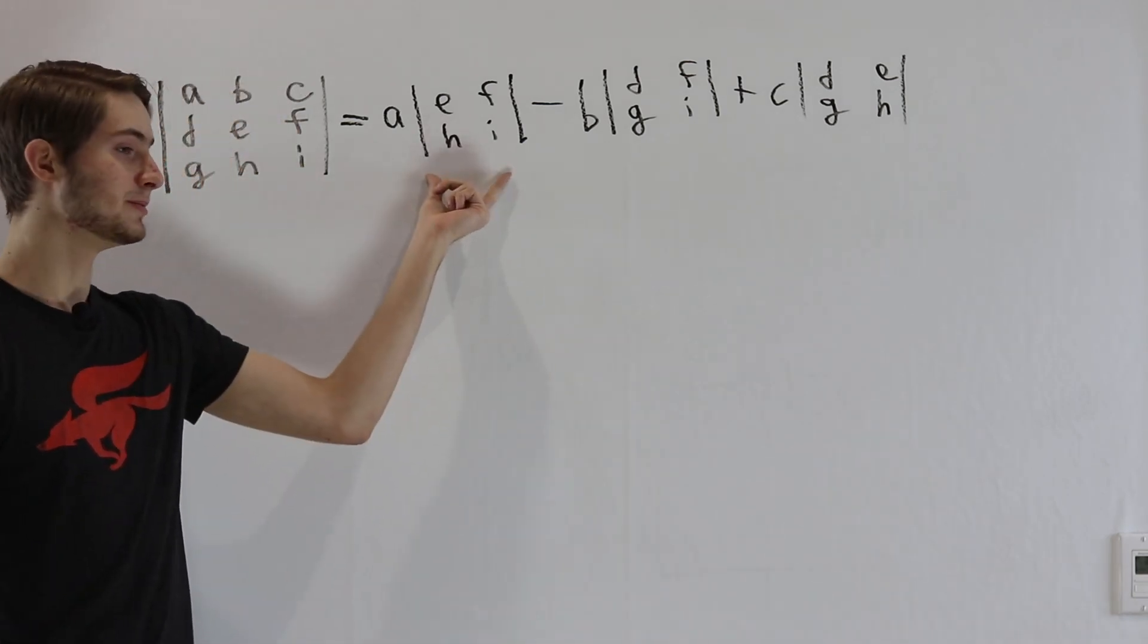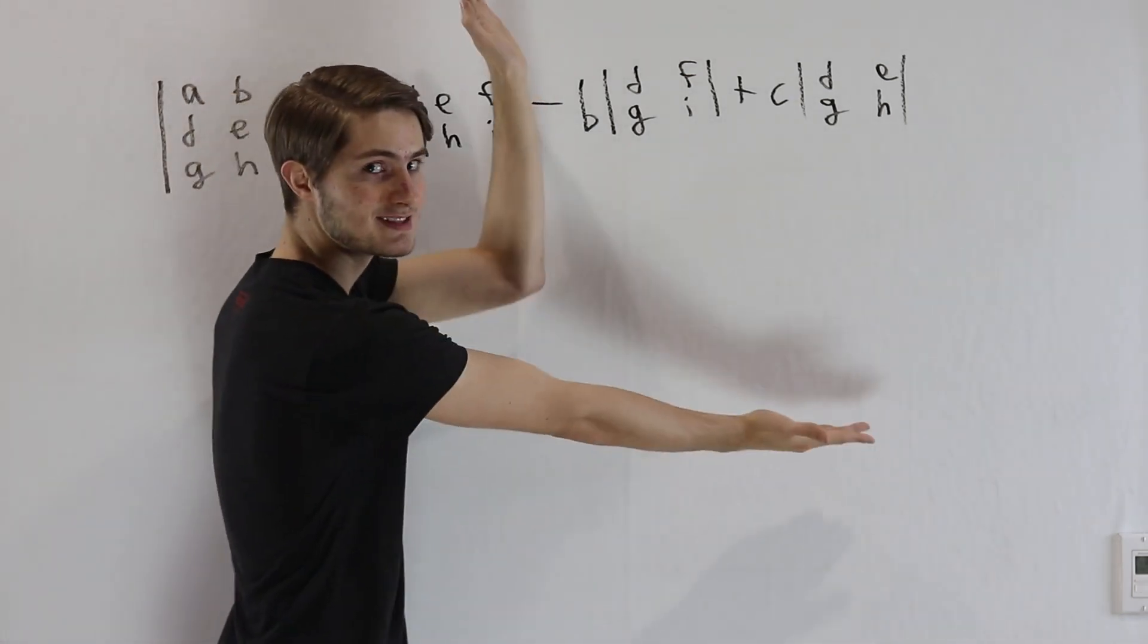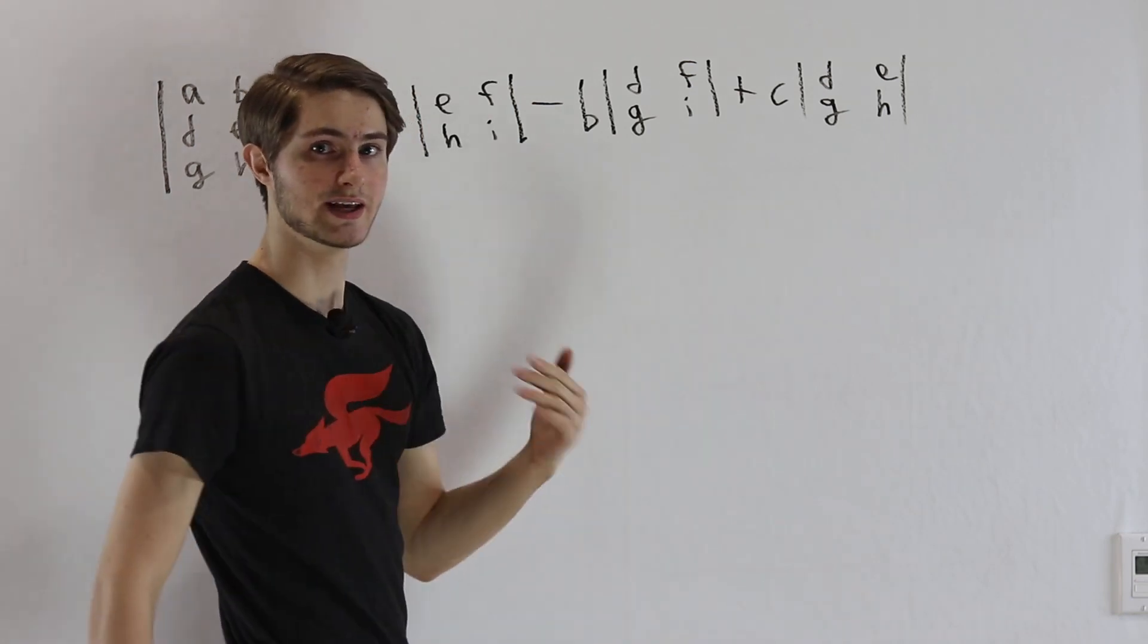Remember, for a 2D determinant, we're looking at two axes and how much the area of this space is getting scaled up, how much the area of that parallelogram is getting bigger.